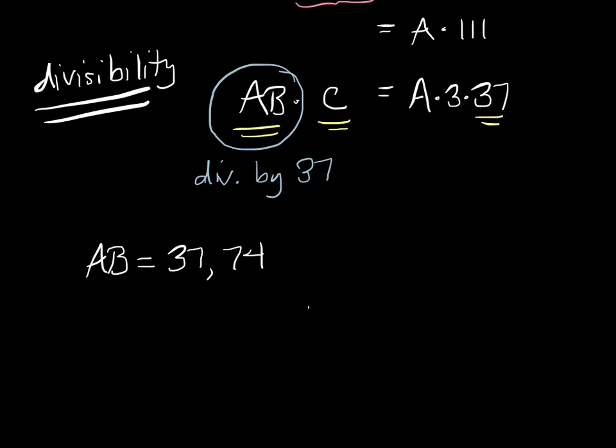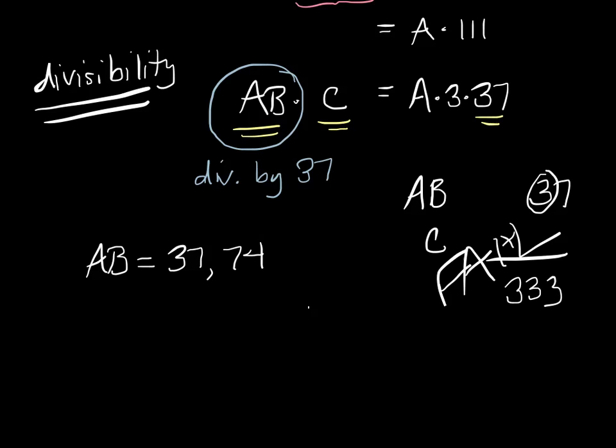Now, if AB is 37, let's test it. AB is 37. C is we don't know. But then we know that 37 times C equals - well, now we know what A is. A is 333. Because I mean, A is 3, so that means the result is 333. But this doesn't work. Because there's no C that fits.